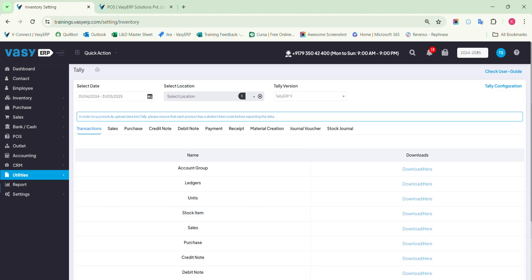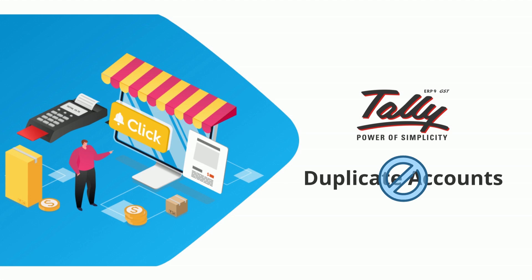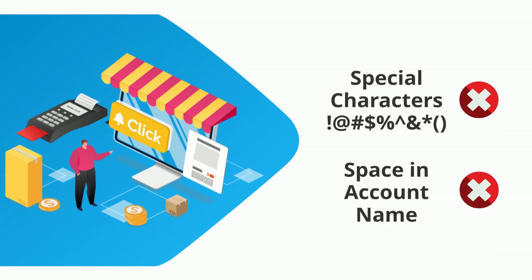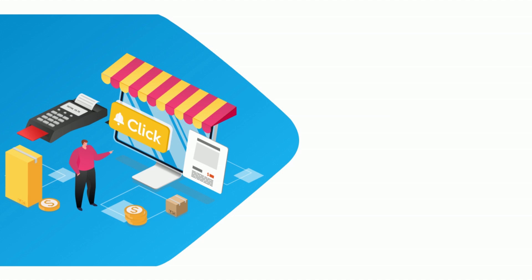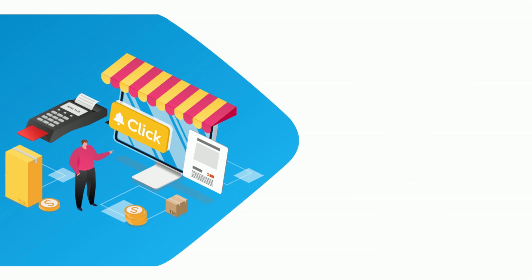The master data needs to be uploaded in Tally in a certain sequence. First, the account groups will be uploaded. As mentioned earlier, Tally will not support duplicate accounts, and this includes special characters and spaces in the account name. For example, if an account name is specified as 'John Carter' which already exists in Tally, and the same account is mentioned in ERP as 'John_Carter', Tally will consider both names as the same and reject it as a duplicate. However, if the account is created as 'Carter John', Tally would consider it as a different entry.